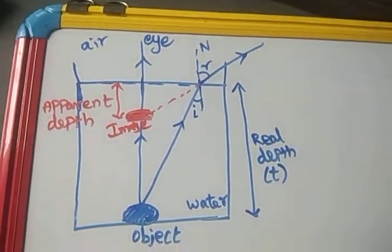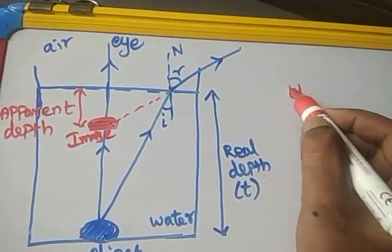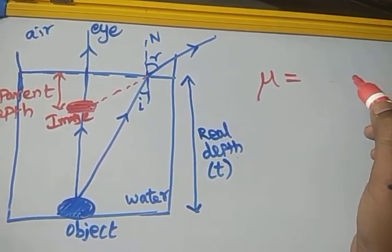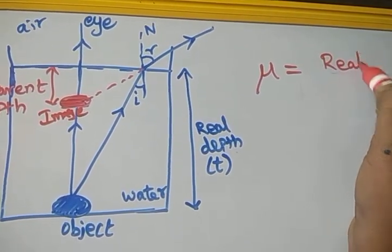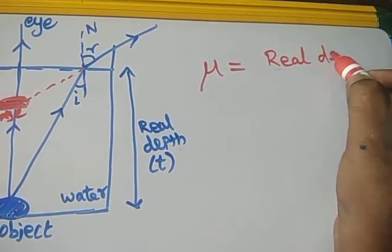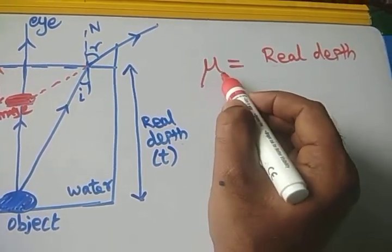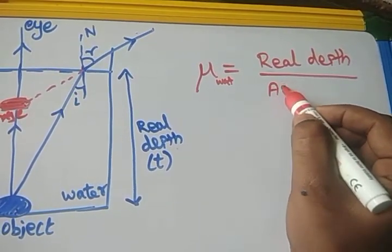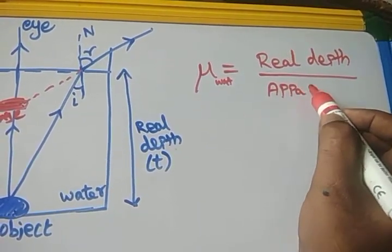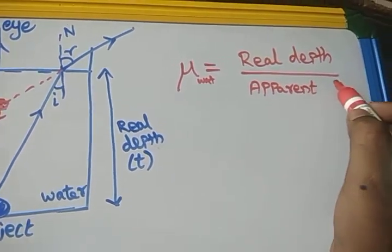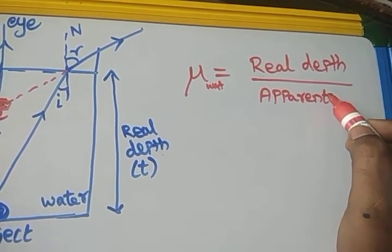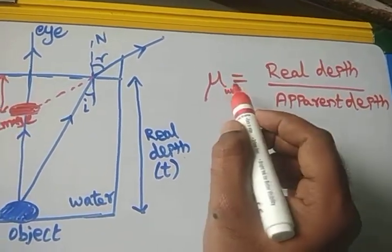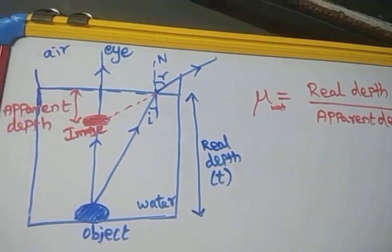The refractive index can be represented in terms of real depth and apparent depth. Real depth divided by apparent depth equals the refractive index of that particular medium — in this case, water. So the refractive index of water can be easily calculated this way, with no need to calculate the angle of incidence or angle of refraction. Real depth divided by apparent depth is the refractive index — this is another method.